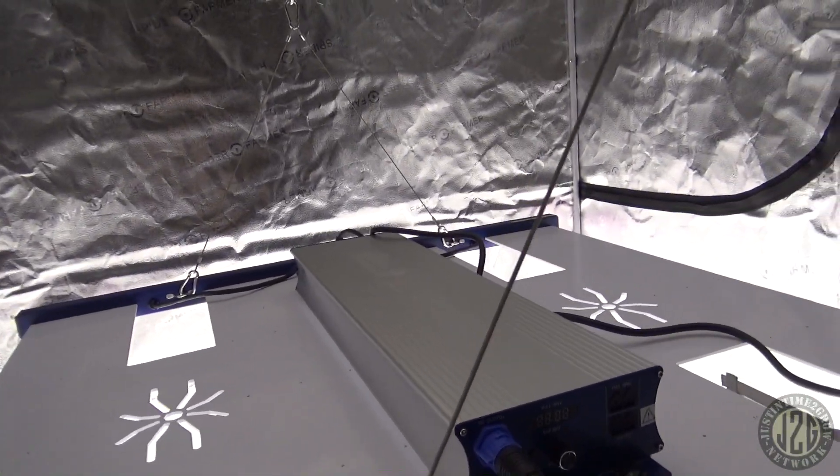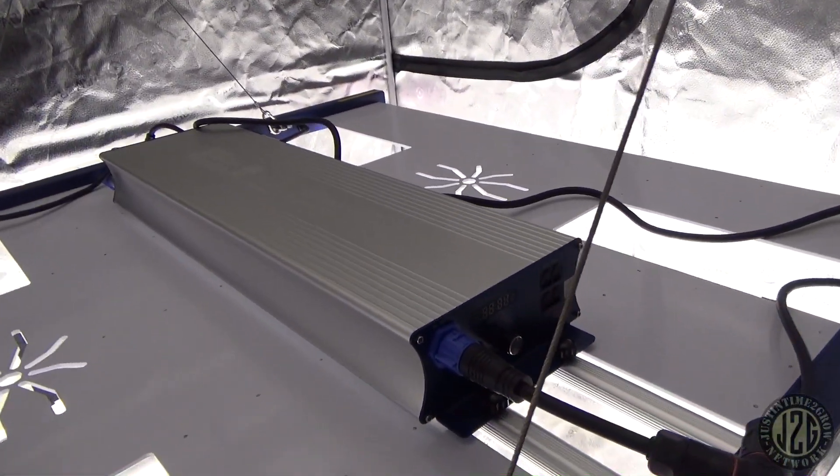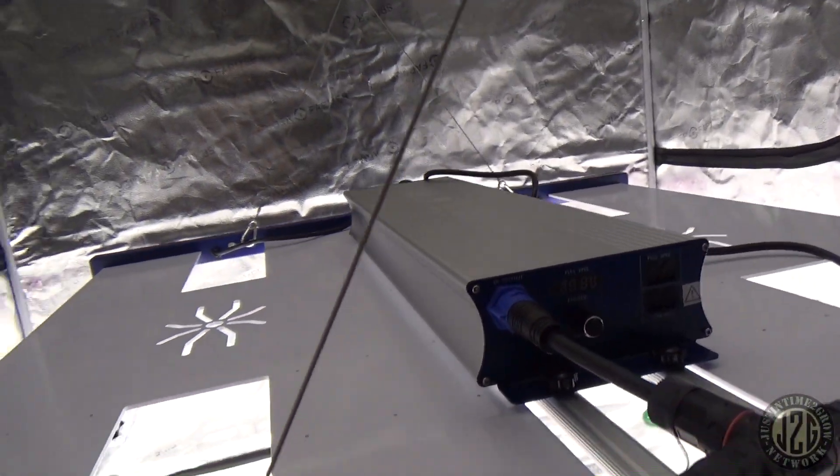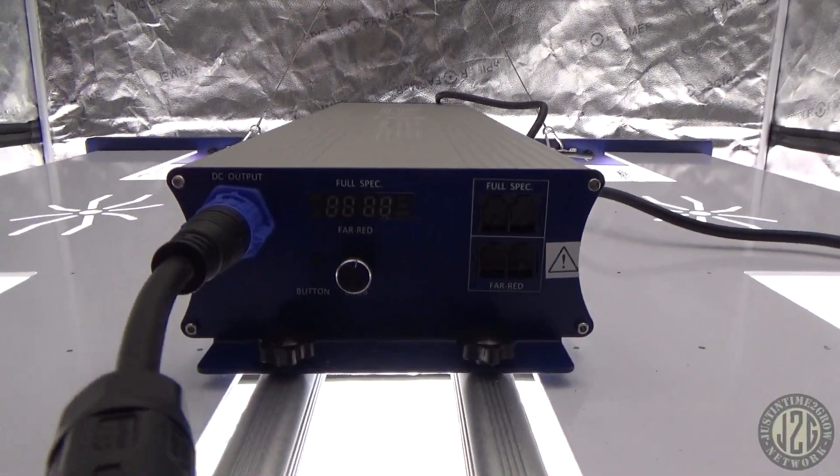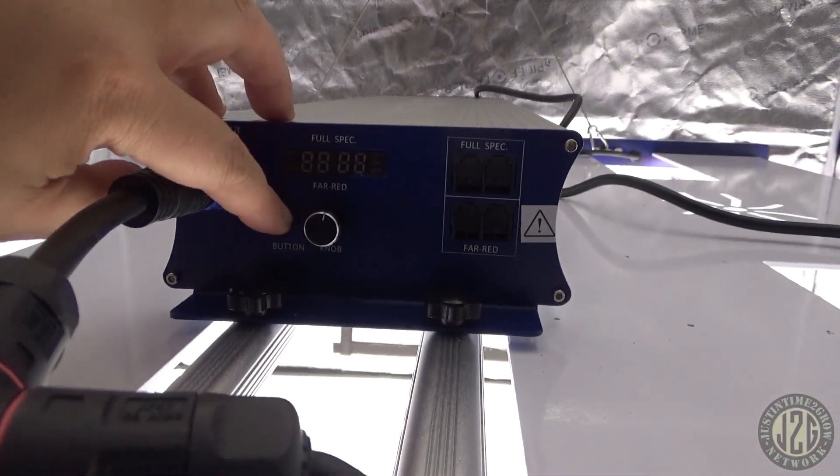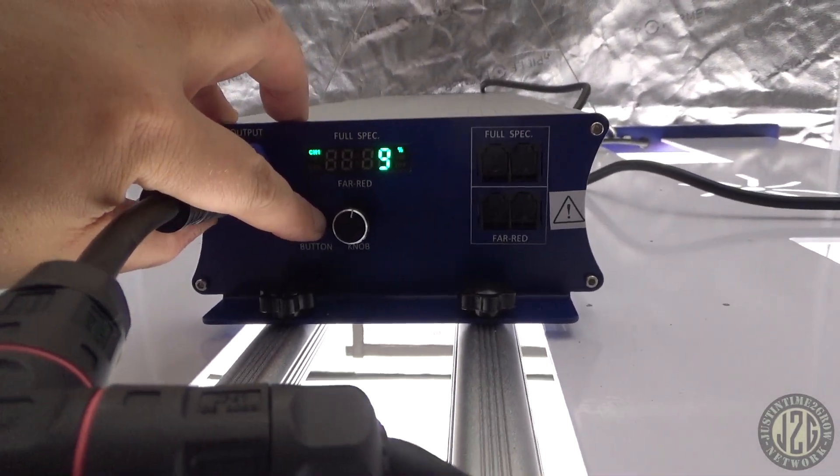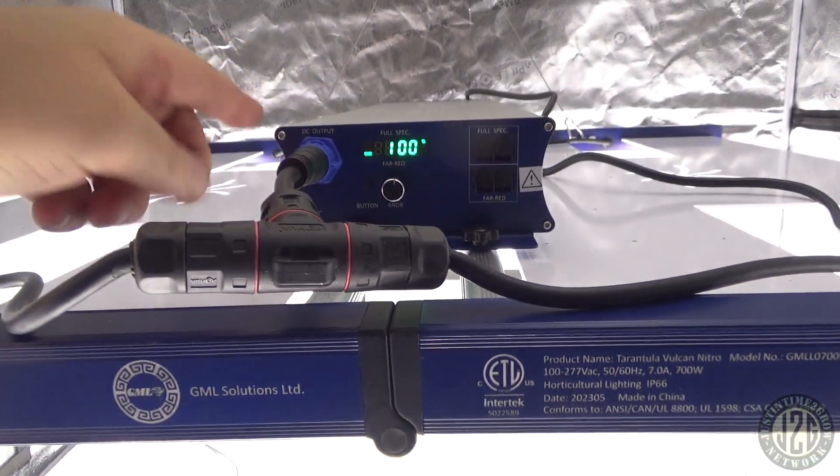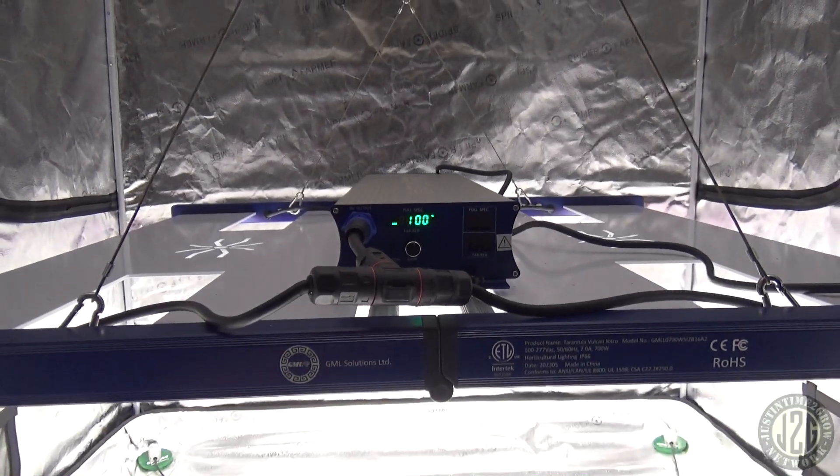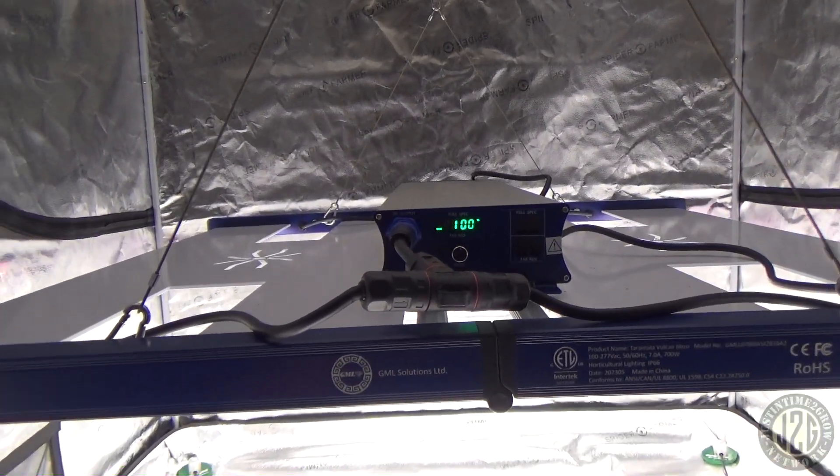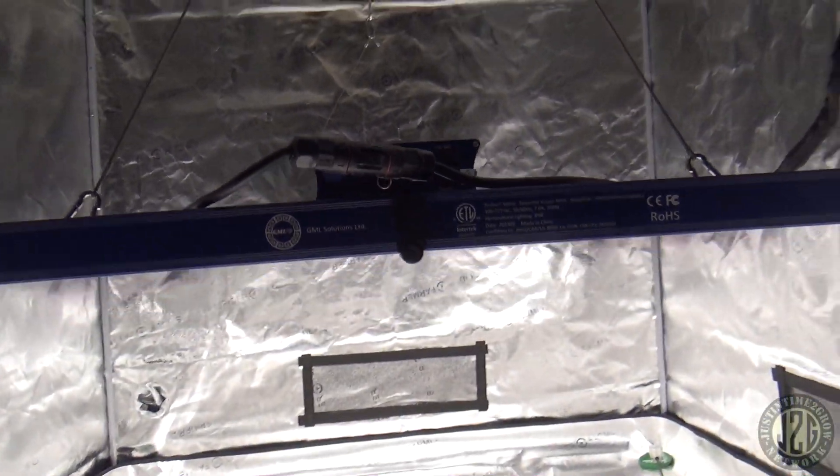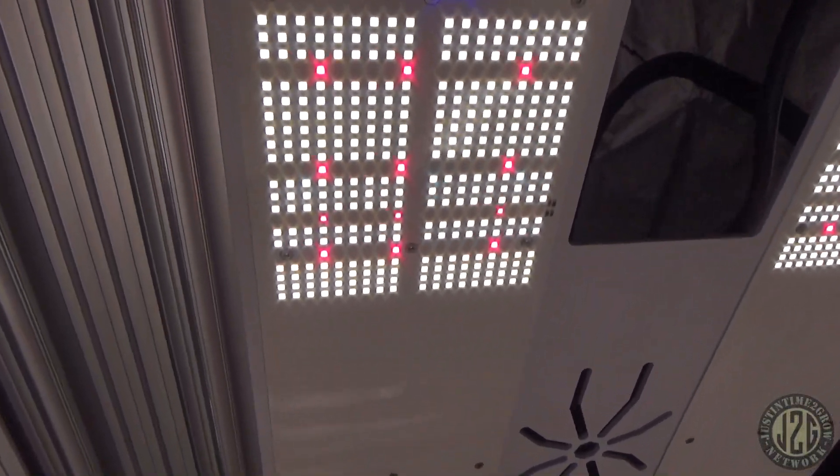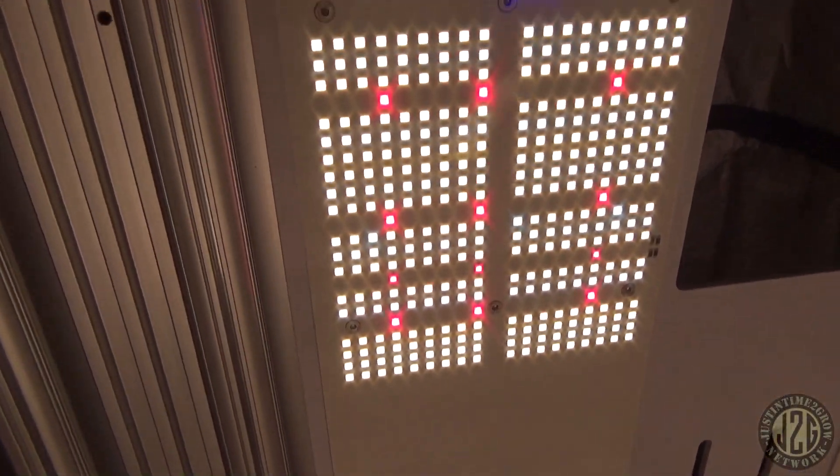You got the driver here - of course it's an Inventronics driver in a little housing there with all the controls on the end. Now with these controls you've got this little button down here that you push to go channel one or channel two. Channel two is red, channel one is white. Right now we've got the red at 100% and the white at 9%, and that's currently what we are looking at right now.